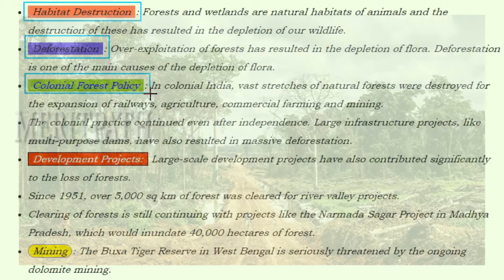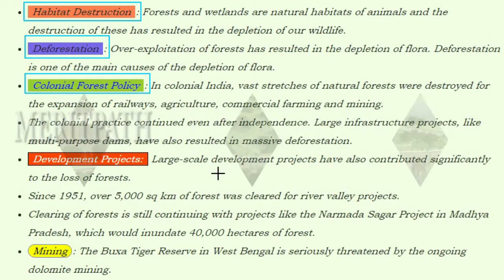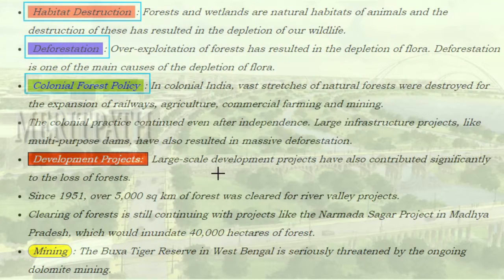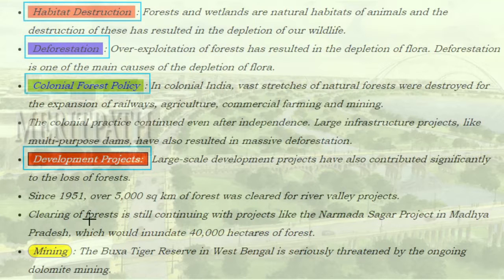Colonial forest policy: in colonial India, vast stretches of natural forest were destroyed for the expansion of railways, agriculture, commercial farming, and mining. This colonial practice continued even after independence. Large infrastructure projects like multipurpose dams have also resulted in massive deforestation. Large-scale development projects have also significantly contributed to the loss of forests — since 1951, over 5,000 square kilometers of forest was cleared for river valley projects.